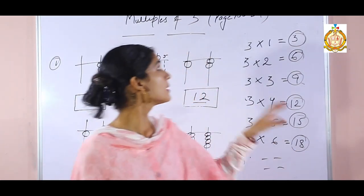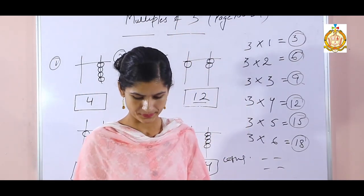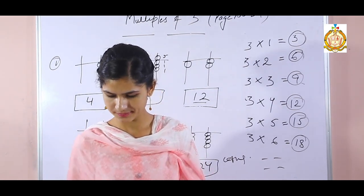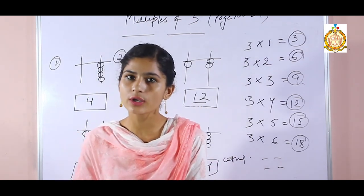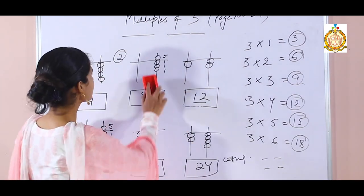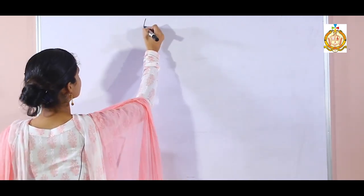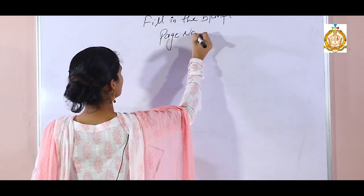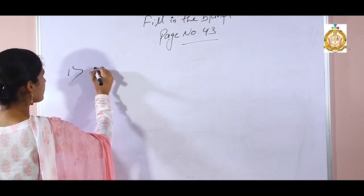This is the concept of multiples of 3, on your page number 34. Now come to page number 43. There are fill-in-the-blanks on page number 43. Now, first fill in the blank.